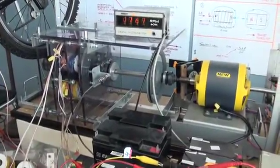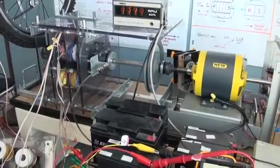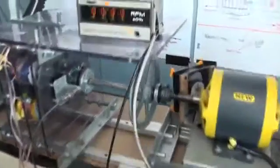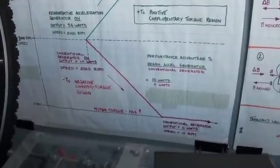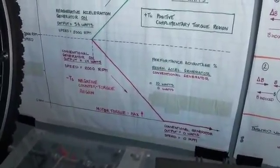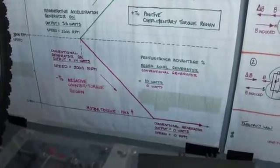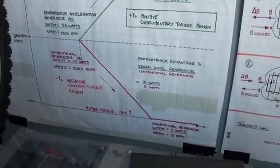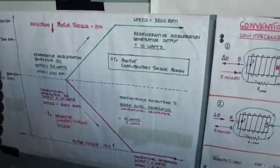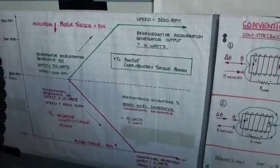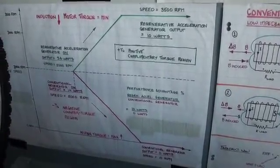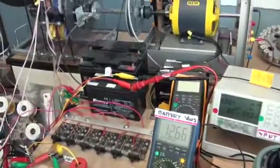So again, what we saw in our demonstration is we saw the conventional generator in the red graph, which decelerated the system down to a dead stop. And the regenerative acceleration generator accelerated the system while recharging the battery. And that's about it.